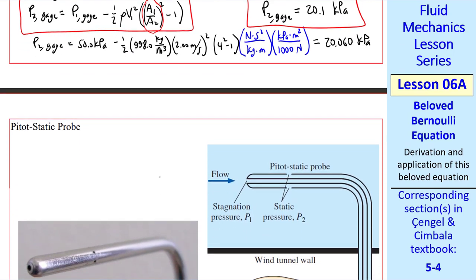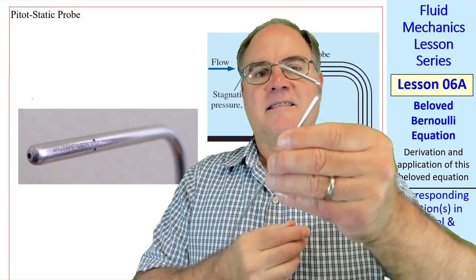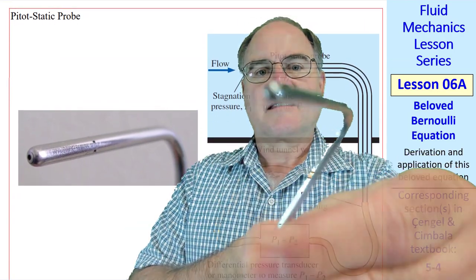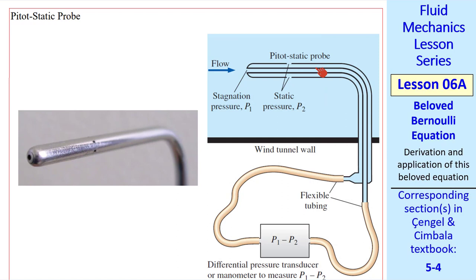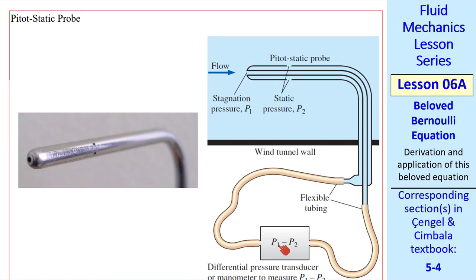Now let's look at a pitot-static probe. Here I show you one. And here's a close-up picture. It's a tube within a tube. The tube at the nose is connected to this inner tube that goes to one end of a pressure transducer. There's four or five holes circumferentially at this location. And those are open to the outer tube, which connects to another tubing that goes to the pressure transducer.